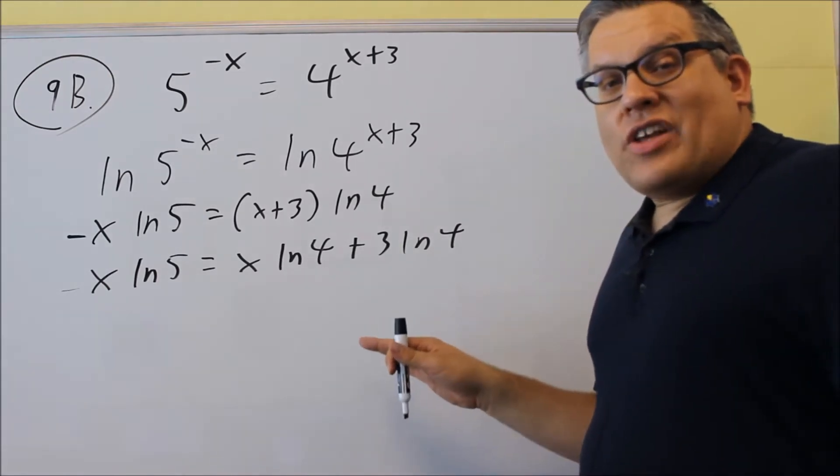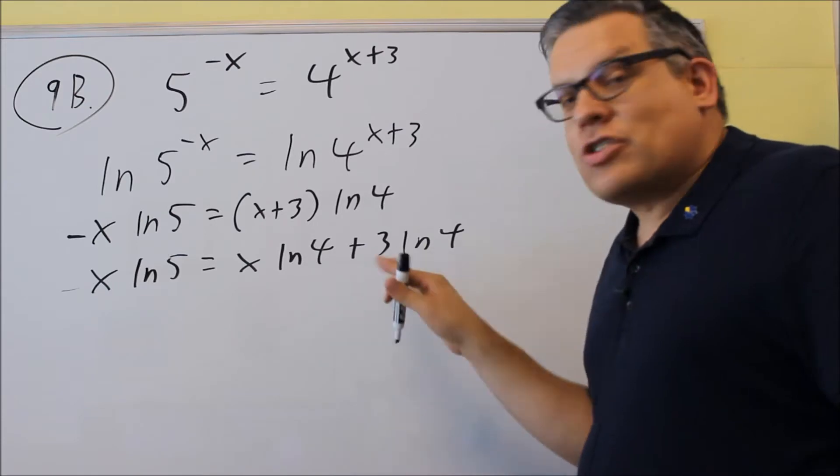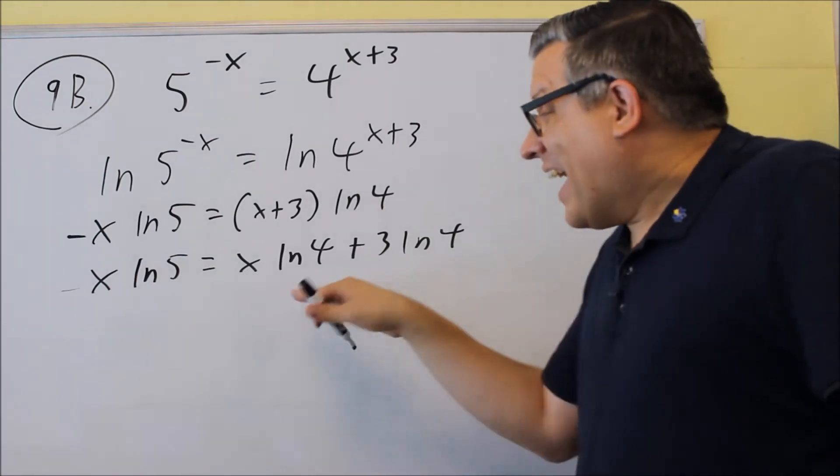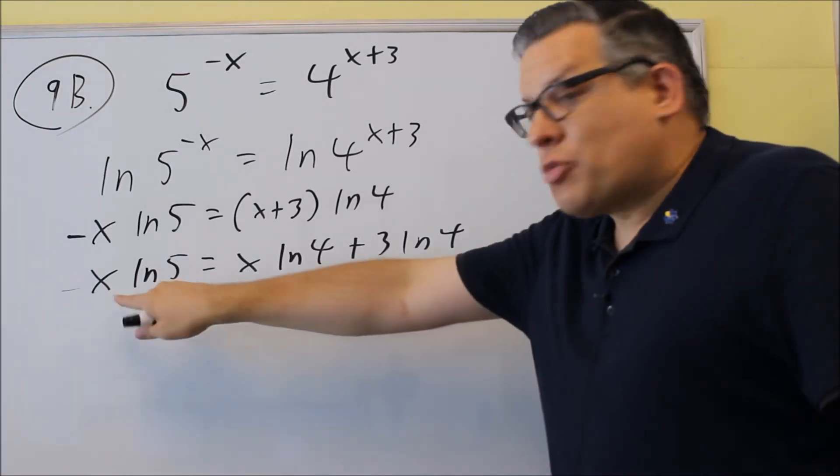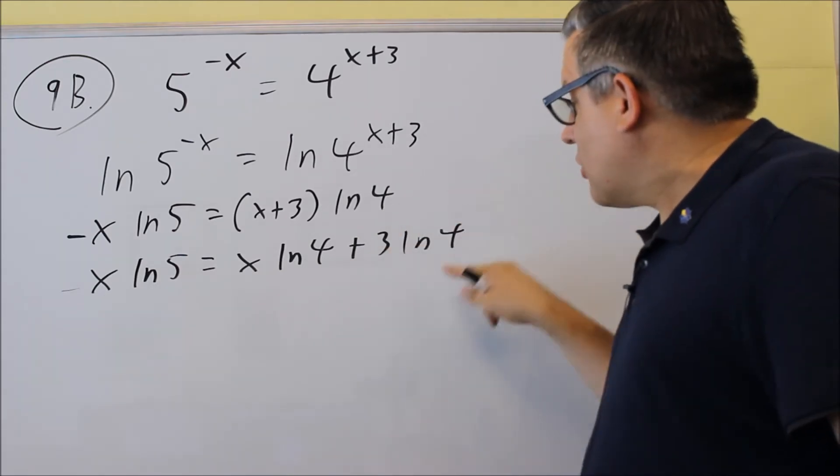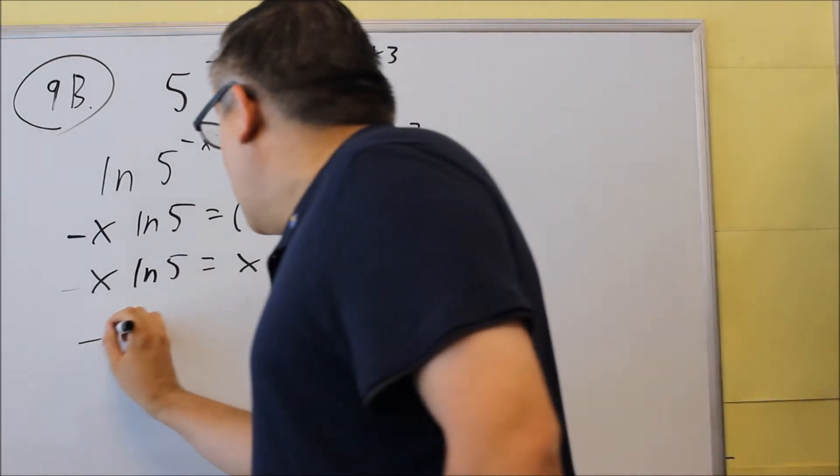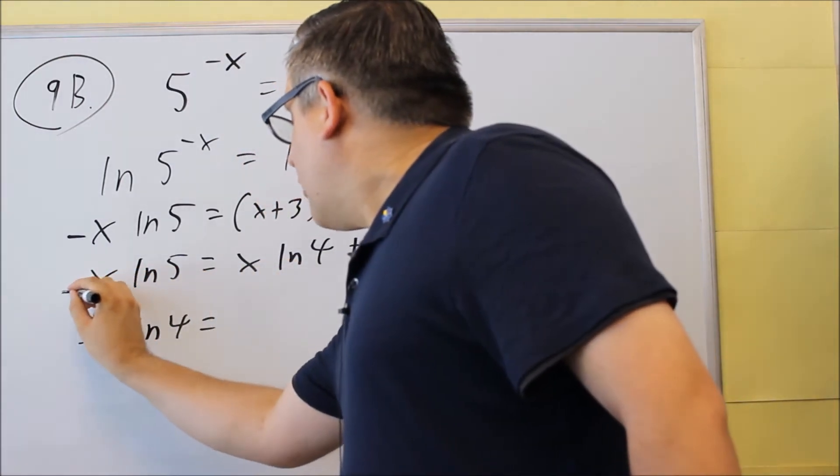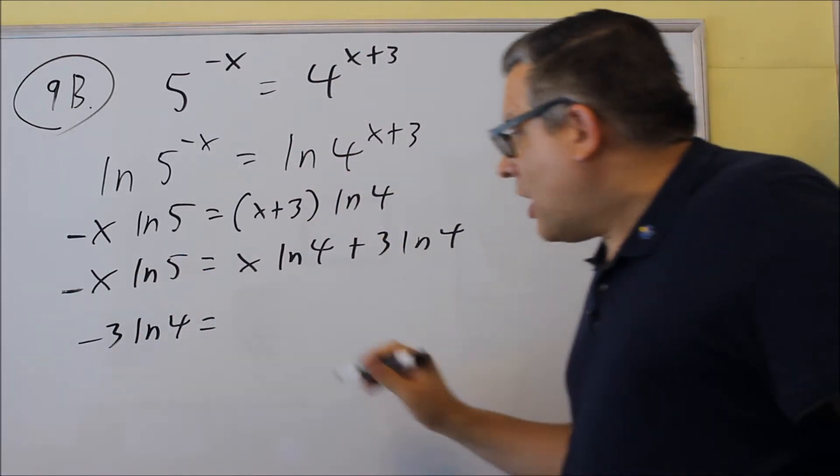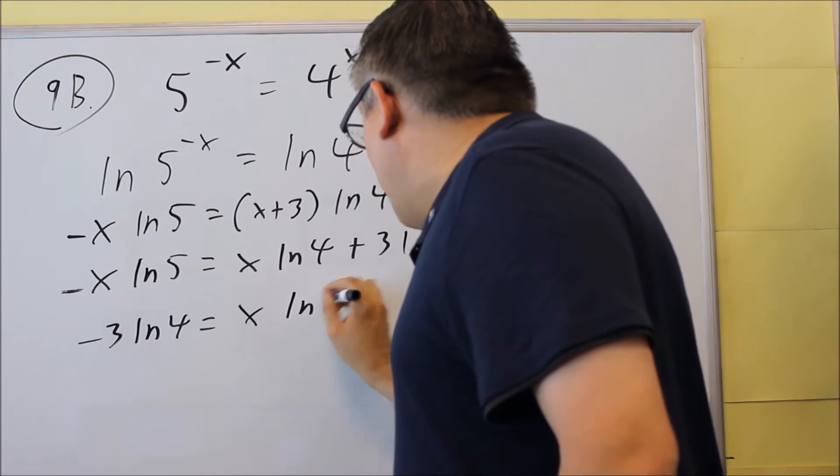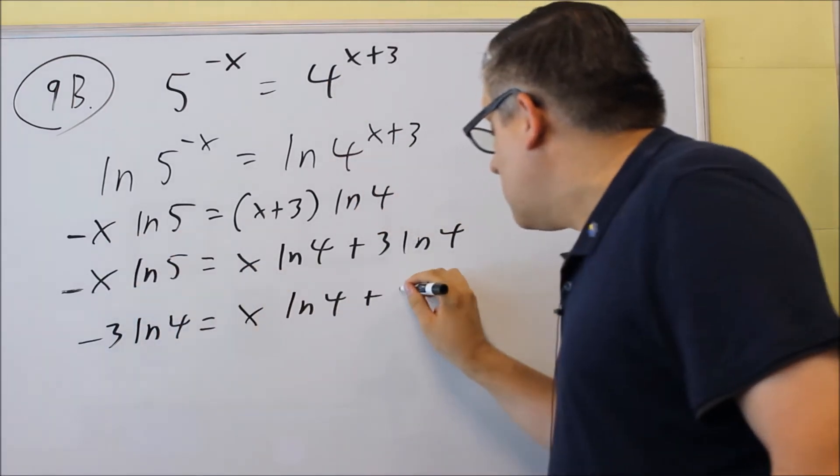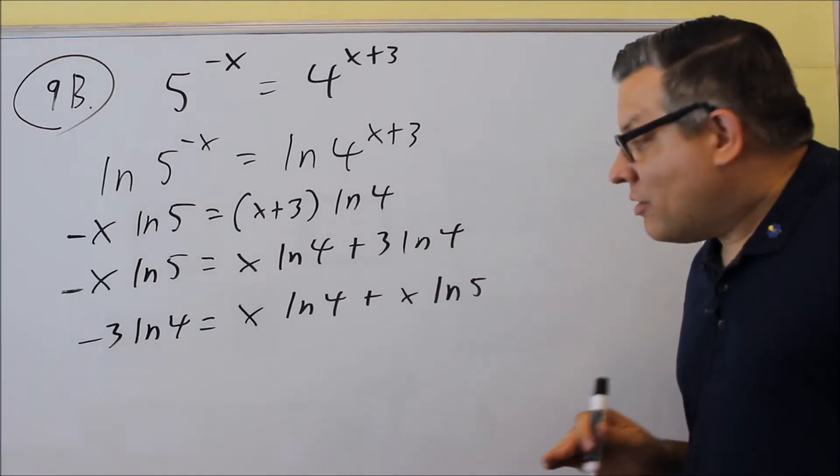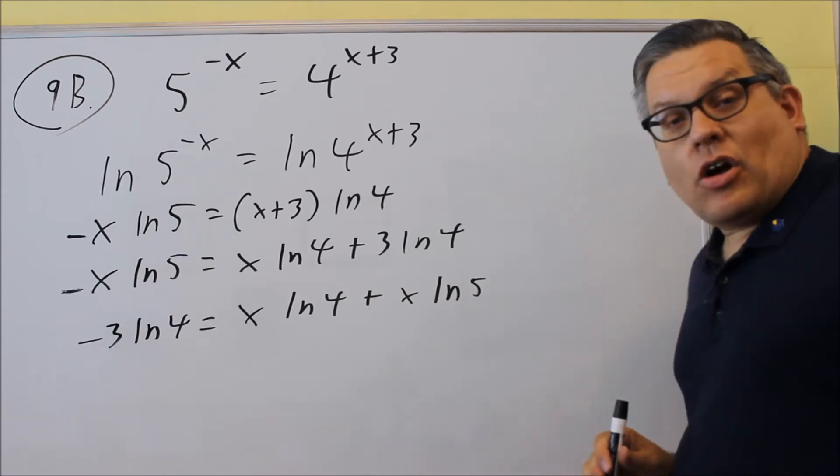The idea here is you need to get all of the x's on one side of the equation. It doesn't actually matter which side you want to bring that over to. So I could subtract this x over there if I want, or I can add the negative x ln 5. What I'm going to do is I'm going to switch places with this one and this one. So I'm going to take this one and move it across the equal sign. It will become negative, negative 3 ln 4. And then this one is already negative on that side. So I'm going to move it across the equal sign. It's going to become positive. So I have x ln 4 already on that side. But I'm adding this one, so plus x ln 5. So you want to get all the x's on one side of the equation. It doesn't matter which side. The most important thing is getting all the x's together.